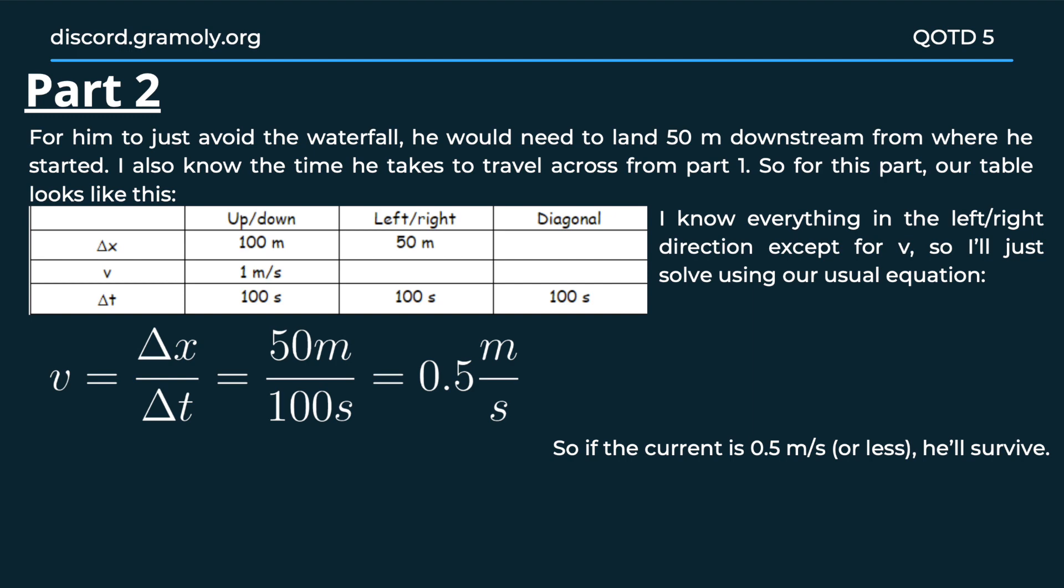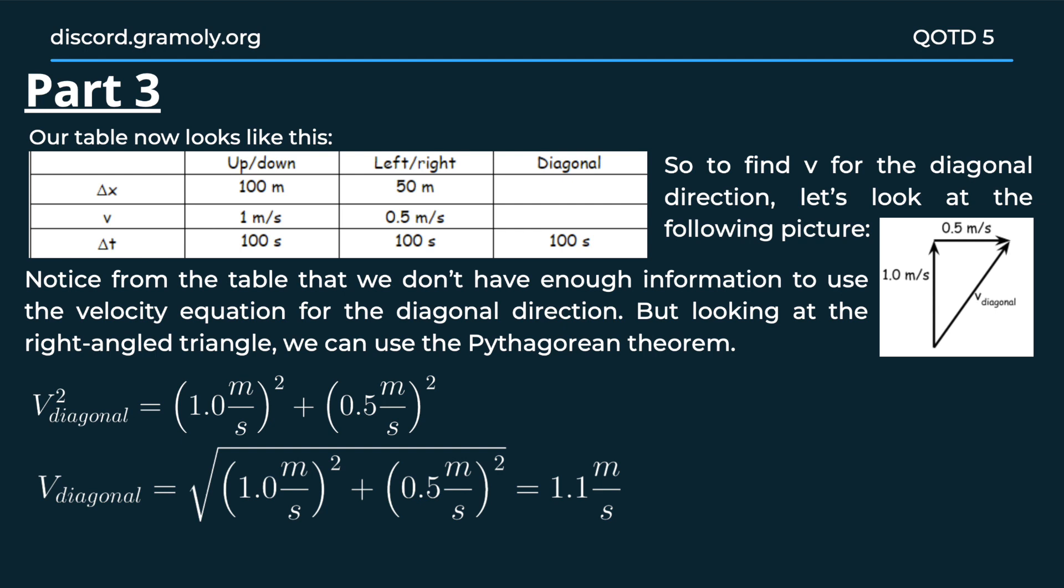That is the answer to the second part. Moving on to the third part of the question. We need to find the net speed of the swimmer as viewed from the shore. We know that the speed across the current is 1 meter per second and in the direction of the current is 0.5 meters per second.